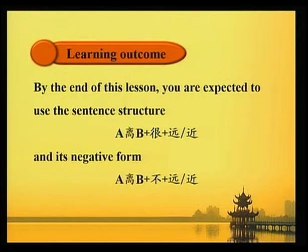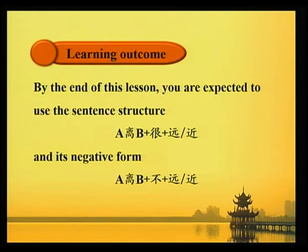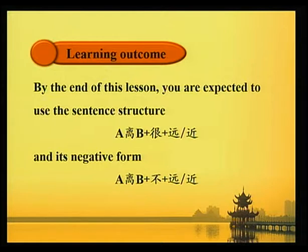Learning outcome: By the end of this lesson, you are expected to use the sentence structure A 离 B 很近 (A, Li, B plus Hen plus Yuan/Jin), and its negative form A 离 B 不远/近 (A, Li, B plus Bu plus Yuan/Jin).